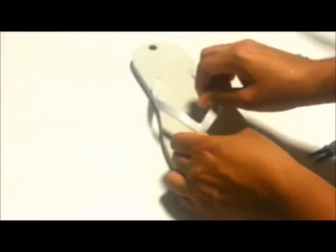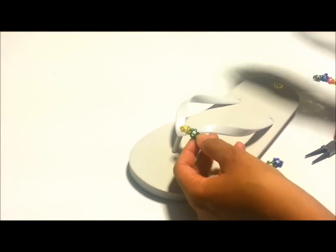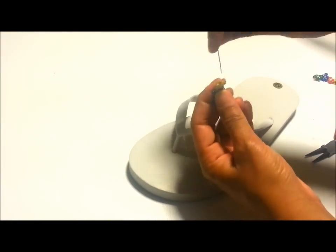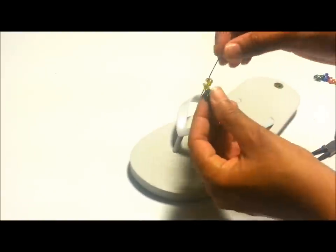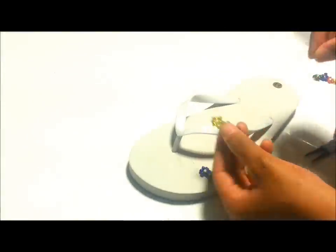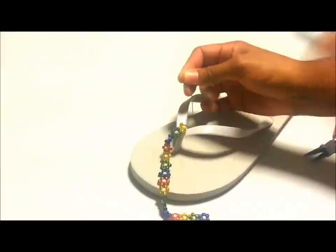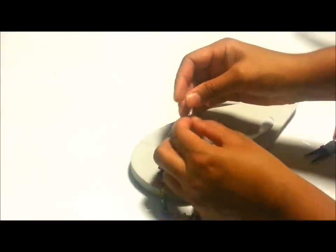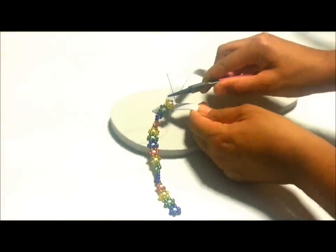This just basically keeps the thread in place. So next what you want to do is run your needle through the center white bead, or the center bead whatever color, for me it's the center white one. Run that through that bead and then basically you're just going to sew it down to the shoe. So once you run your needle through that bead, you're going to put the needle through the top of the strap and it secures that bead down to the shoe strap.